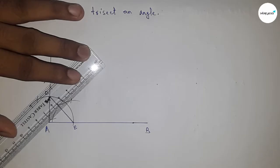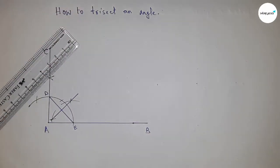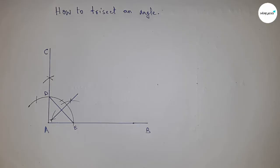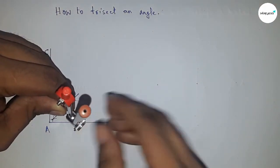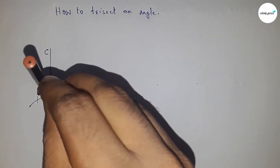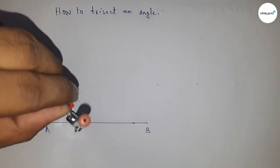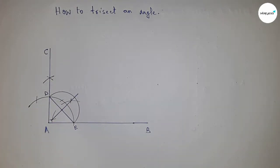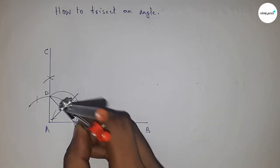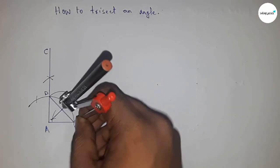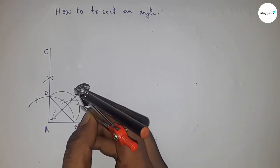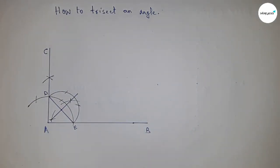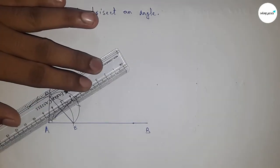Joining these points which intersect at a point — this is the intersecting point. Next, taking the distance OE and OD to draw a semicircle through points D and E. Putting the compass here with the same length and cutting here, and putting the compass here with the same length and cutting here. So this is the process to trisect. Now joining these lines.